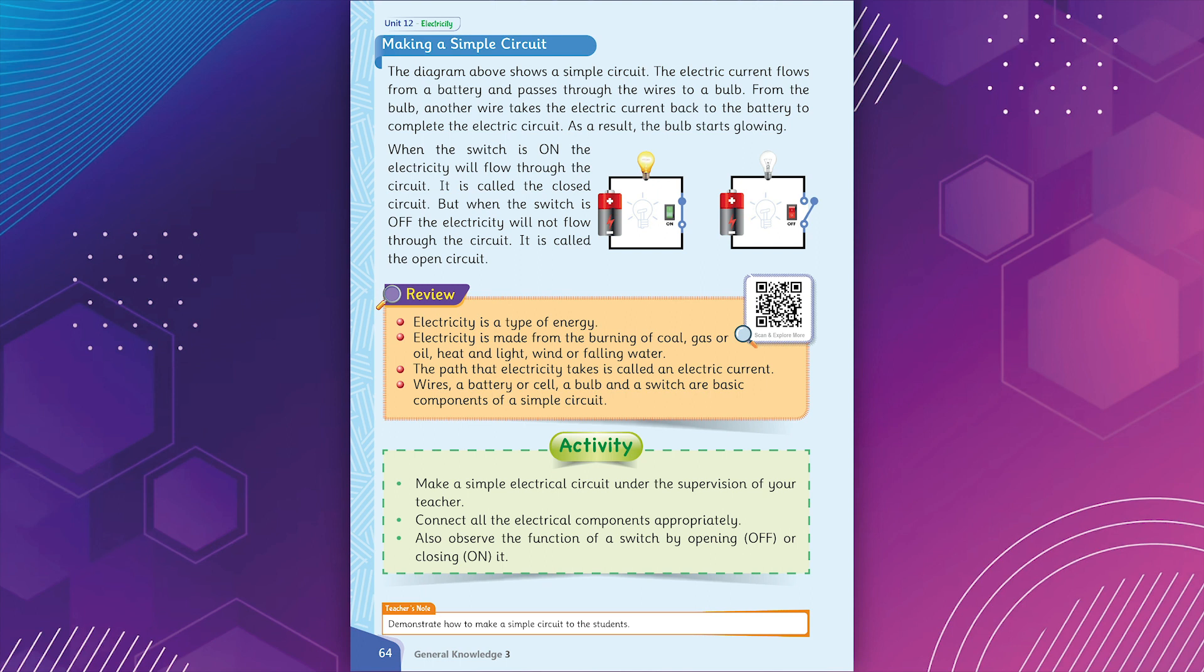When the switch is on, the electricity will flow through the circuit. It is called the closed circuit. But when the switch is off, the electricity will not flow through the circuit. It is called the open circuit.